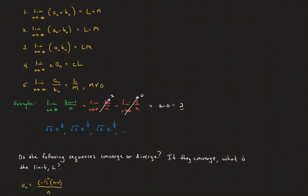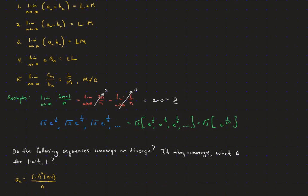The next example: the sequence square root of 3 times e to the one-half, e to the one-fourth, e to the one-eighth, and so on. This can be written as square root of 3 times e to the (1 over 2 to the n). Working inside out, 1 over 2 to the n goes to zero as n goes to infinity, so this approaches square root of 3 times e to the zero, and since e to the zero is 1, the limit is square root of 3.